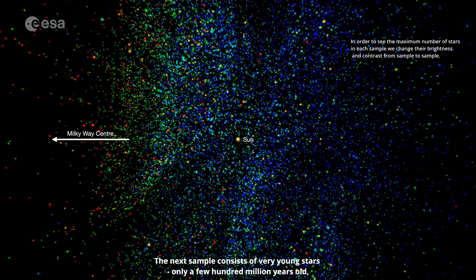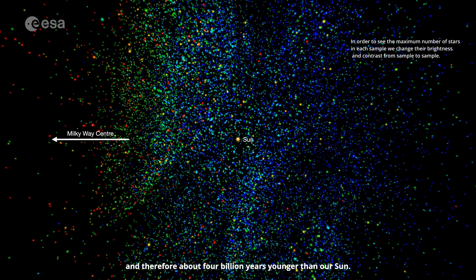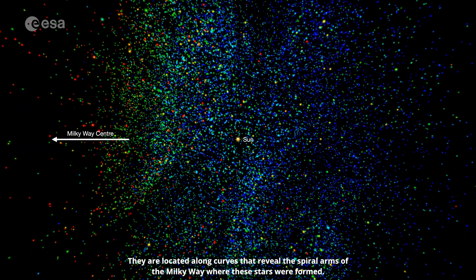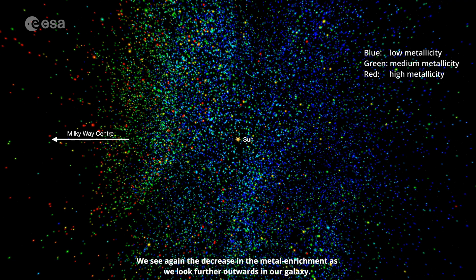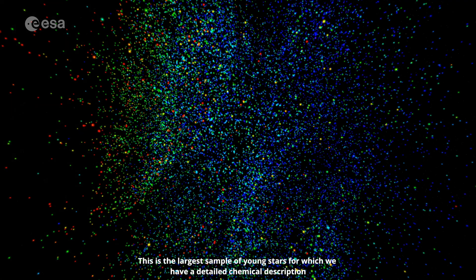The next sample consists of very young stars, only a few hundred million years old, and therefore about four billion years younger than our sun. They are located along curves that reveal the spiral arms of the Milky Way where these stars were formed. The sun is in a region outside the spiral arms. We see again the decrease in the metal enrichment as we look further outwards in our galaxy. This is the largest sample of young stars for which we have a detailed chemical description, thanks to Gaia Data Release 3.